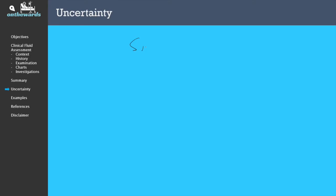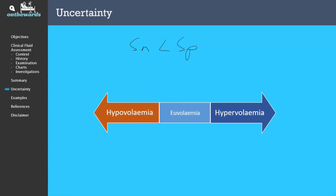Most of the clinical symptoms and signs that I've mentioned have low sensitivity but have reasonable specificity. What this means is that the absence of one particular sign does not have any significant implication on its own. As a result of the low sensitivity of the clinical fluid assessment, we are generally only able to pick up the extremes of volume status. Many of the patients in the middle of this continuum are not able to be picked up. This is why a fluid assessment needs to take into account all the information available and be put into context.